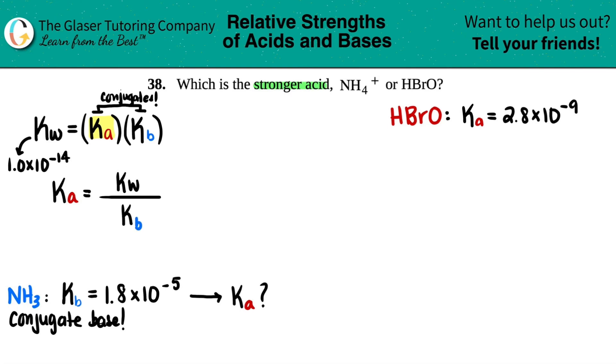So let's see what's happening. Kw is that constant number that we now know, 1.0 times 10 to the negative 14th. And the Kb they gave me, 1.8, and maybe I'll put that in blue, 1.8 times 10 to the negative 5th. So from here, we could finally find the Ka value.